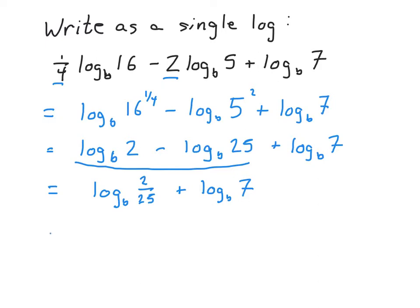And then using the product rule, the sum of two logs is log of the product. So this is log base b of 2 twenty-fifths multiplied by 7.